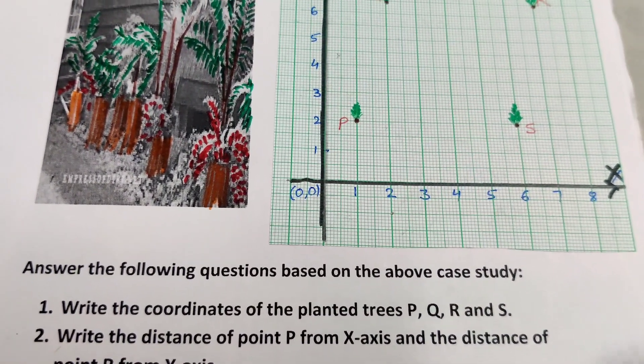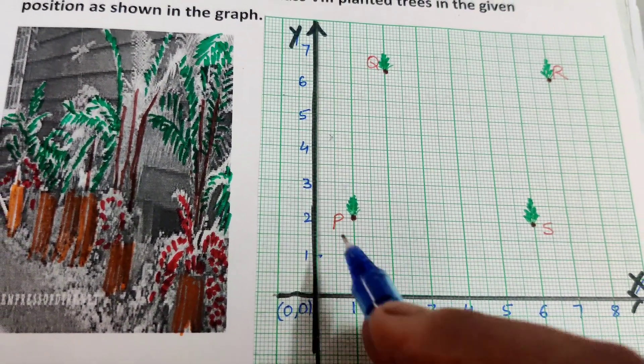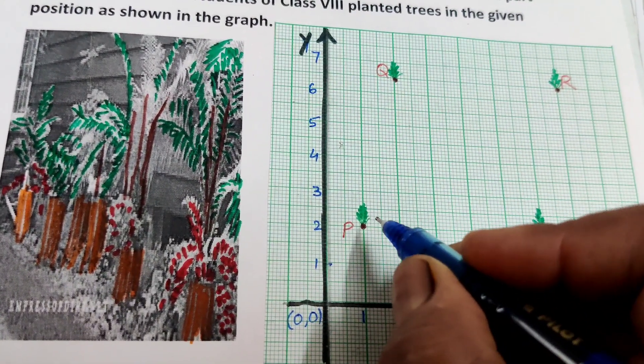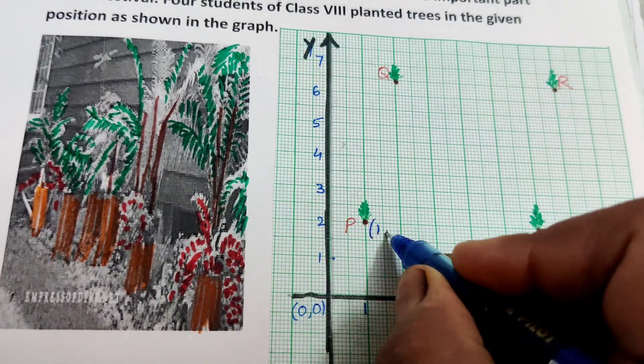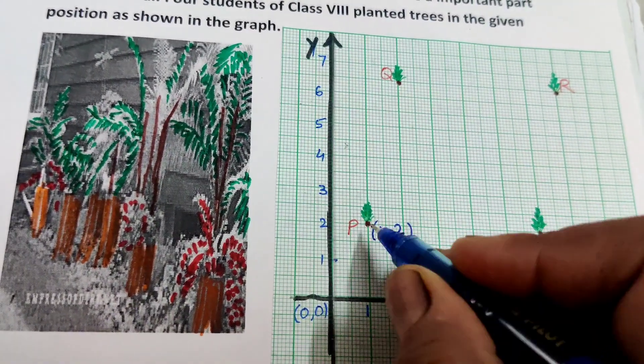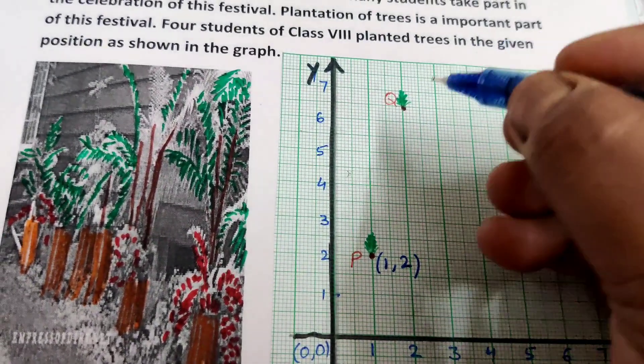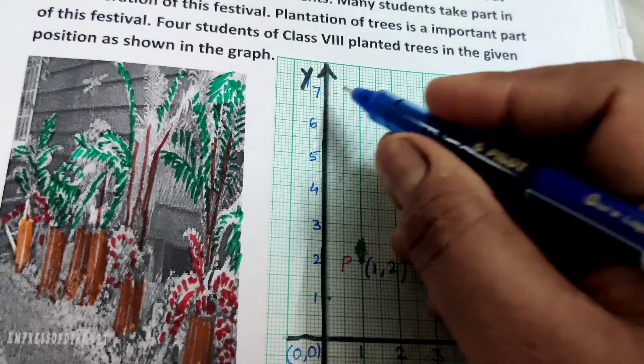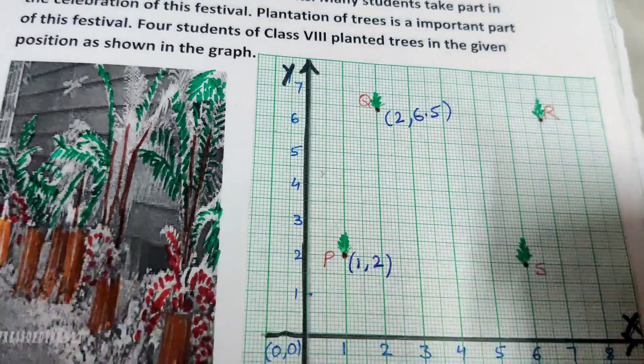Now the coordinates of the planted trees. P from the x-axis 1, 2. The coordinates of P is 1, 2. For Q, Q is 2. X, Y means 2. And here is the point between 6 and 7. It means 2, 6.5.